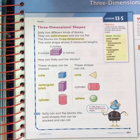Three-dimensional shapes. Sally has different kinds of blocks. They are solid shapes and are not flat. The blocks are three-dimensional. This solid shape shows three measured lengths: three inches, four inches, two inches.